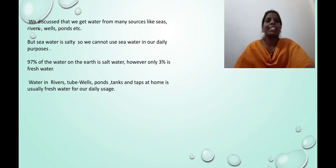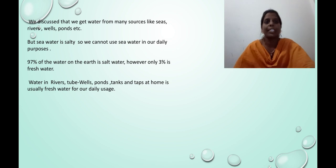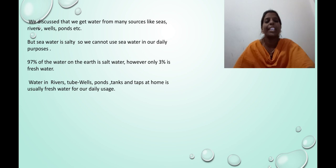We discussed that we get water from many sources like seas, rivers, wells, ponds, etc. But seawater is salty, so we cannot use seawater for our daily purposes. 97% of the water on the earth is salt water. However, only 3% is fresh water. Water in rivers, tube wells, ponds, tanks, and taps at home is usually fresh water for our daily usage.